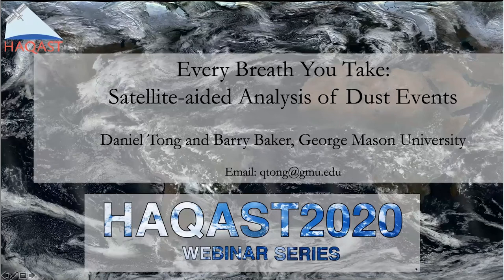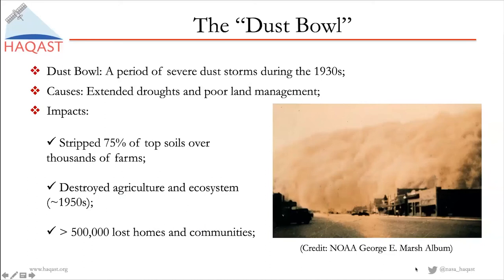In order to understand this topic — why we care about dust events — I have to take you a few steps back into history. The U.S. is a young country, but we did have this extreme environmental catastrophe called the Dust Bowl. The Dust Bowl is a period in the 1930s of very severe dust storms, caused by extended drought right after the Great Depression and many years of very poor land management.